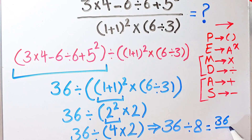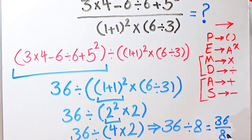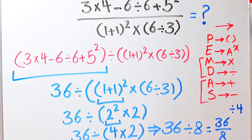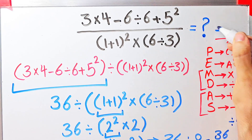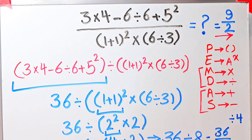The numerator and denominator are both divisible by four, so we divide both by four. 36 divided by four equals nine, and eight divided by four equals two. So the final answer of this question equals nine over two. Thanks for watching guys, please subscribe to the channel and leave a comment. Goodbye!